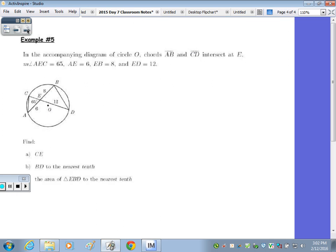In number 5, it says we have chords AB and CD, which intersect at E. AE, or measure of angle AC is 65. That's labeled in the picture. The length of AE is 6, which is labeled in the picture. EB is 8, and ED is 12. So, everything's labeled. We need to find for part A, the length of CE, and CE is right here.